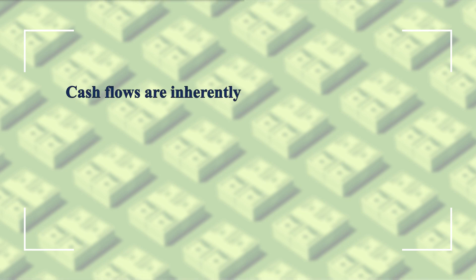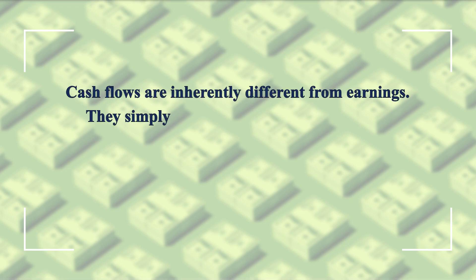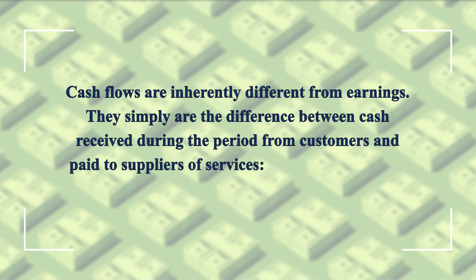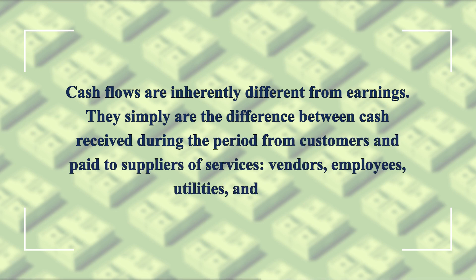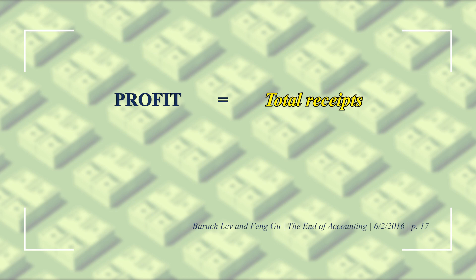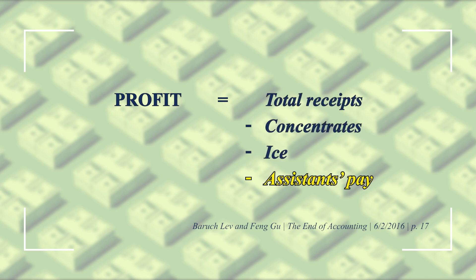Cash flows are inherently different from earnings. They simply are the difference between cash received during the period from customers and paid to suppliers of services, vendors, employees, utilities, and more. Cash flow is a much simpler metric — more straightforward and easier to compute than earnings. It is, in essence, a lemonade stand measure. By the end of the day, your profit is total receipts from thirsty drinkers, minus the cost of concentrates, ice, and assistance pay.